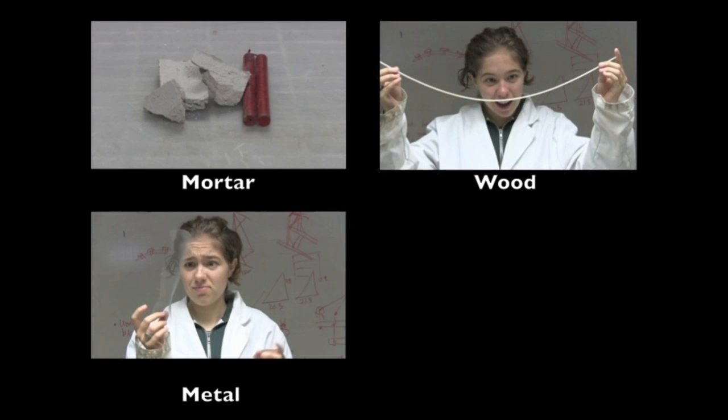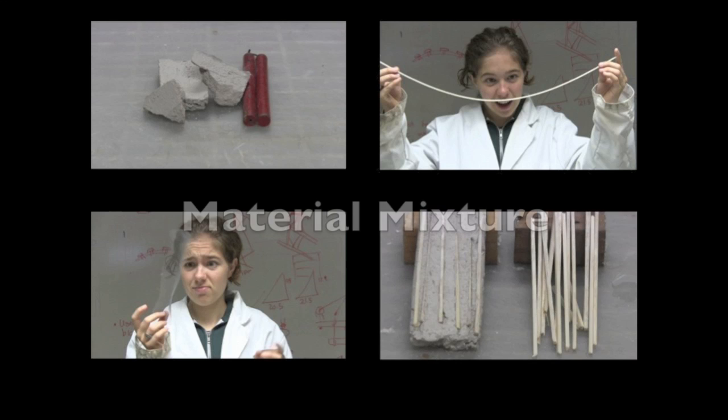We saw that the screen and the balsa wood bent when we pulled on it, rather than breaking like the mortar. In order to improve our mortar, why don't we try combining the different materials to see if we can get a stronger material.